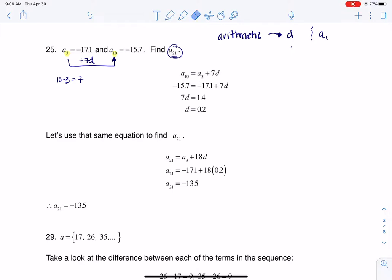So then I go ahead and I plug in for the letters that I have, right? Negative 15.7, negative 17.1, and I solve for D. So great, I get my D value taken care of. I know D is 0.2.